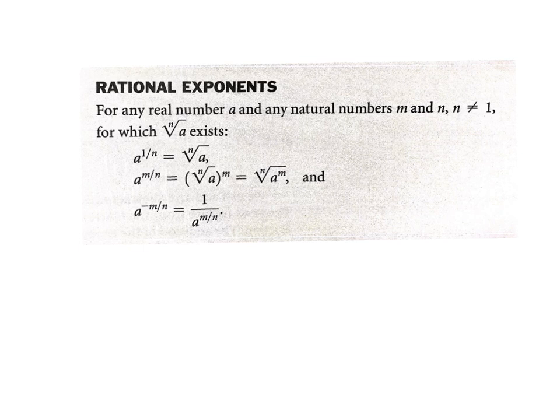Rules for fraction exponents — fraction exponents are rational exponents. The denominator of your fraction is the root, and the numerator is the power. So the bottom number is the root and the top is the power. And don't forget: if it's a negative exponent, it flips — but when you flip it, it just makes it positive, and the denominator is still the root while the top number is still the power.